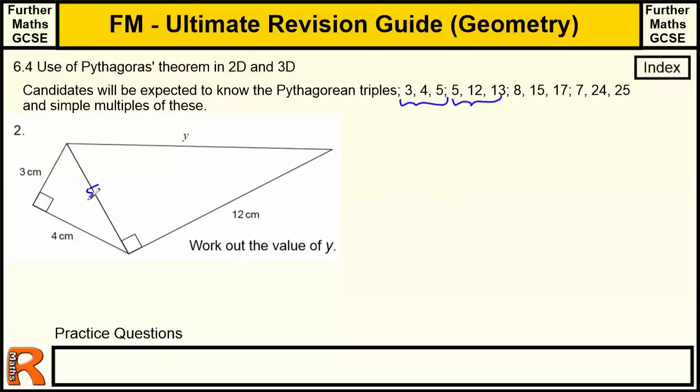The 3, 4, 5 triangle, so that one is 5. Then 5, 12, 13 triangle, so Y equals 13, makes this very trivial. So if you know those Pythagorean triples, it can make this sort of question very straightforward if it's given in such a way that you can use them one after the other.